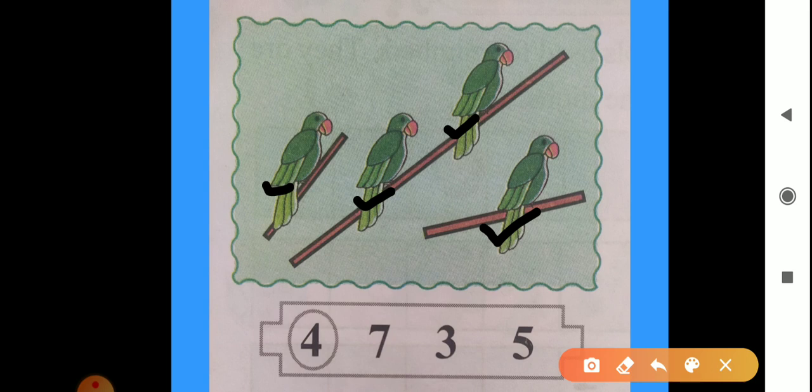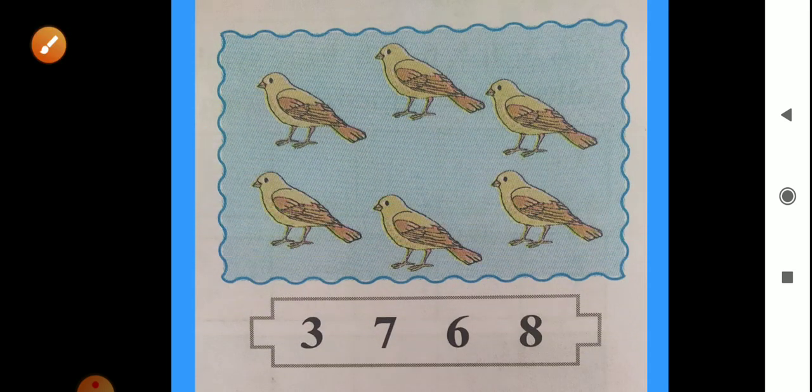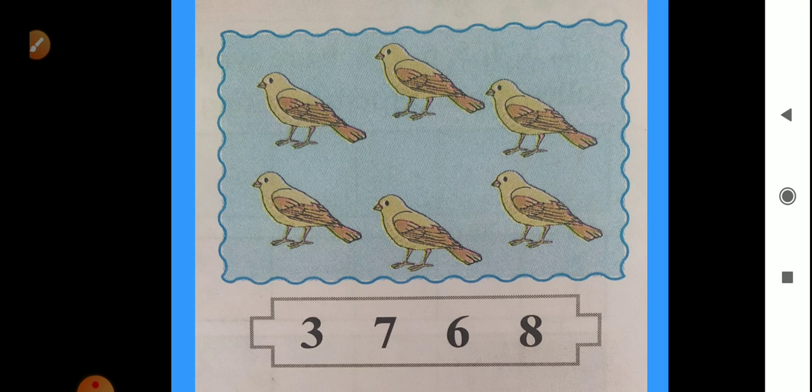So we will solve next exercise. Look here. What is here? Sparrows. In this picture we can see sparrows. And in the below boxes here are numbers. 3, 7, 6 and 8. First we count the sparrows and then we circle the correct number.